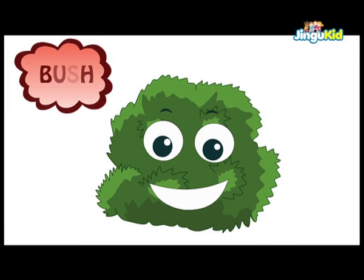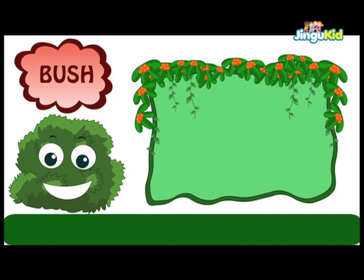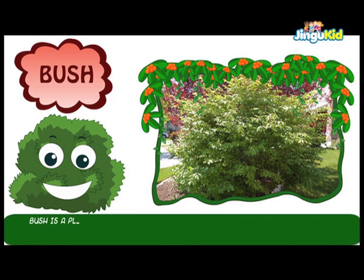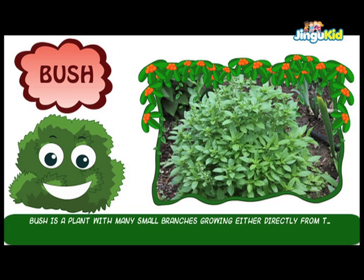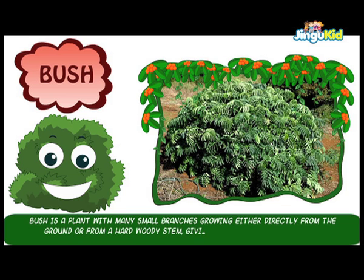Bush. A bush is a plant with many small branches growing either directly from the ground or from a hard woody stem, giving the plant a rounded shape.